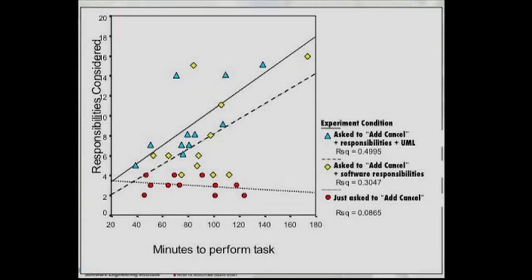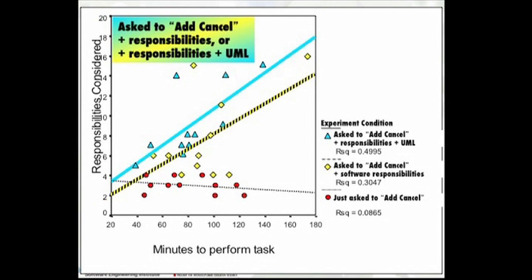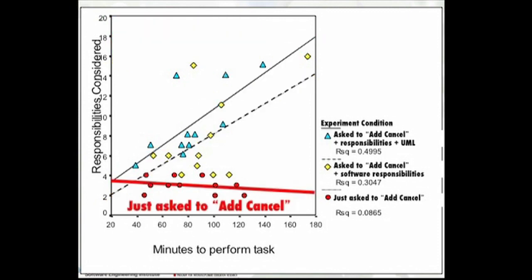There was one more really interesting thing in our results. We had asked them to spend as much time as they wanted modifying this architecture, expecting that the participants who spent longer would produce higher quality solutions, as is typical in any problem solving task. That is the result we got when we gave them the software responsibilities. But that's not what we saw when engineers were just asked to add cancel. There they worked and worked. They did not give up. Some people spent two hours on this, but their solution was no better. So they didn't even know that they didn't know.